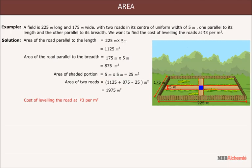Therefore, the cost of leveling the road at the rate of ₹3 per meter square is equal to ₹3 × 1975, that is ₹5925.